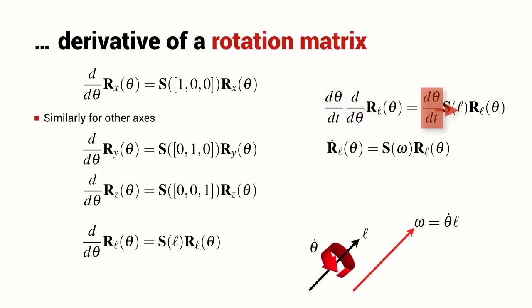What this says is that the time derivative of a general rotation matrix, a rotation of theta about the vector L, is equal to a skew symmetric matrix computed on the vector omega multiplied by the original rotation matrix. Omega in this case is the angular velocity vector. It is the rate of change of angle multiplied by the vector direction about which the rotation is occurring.